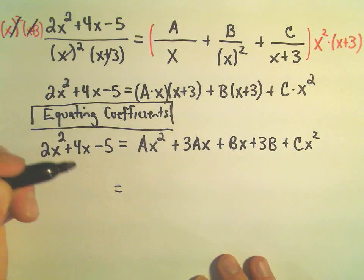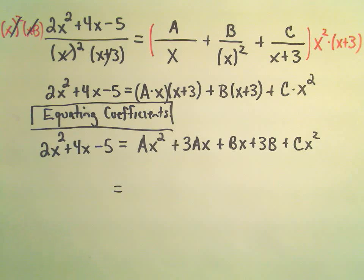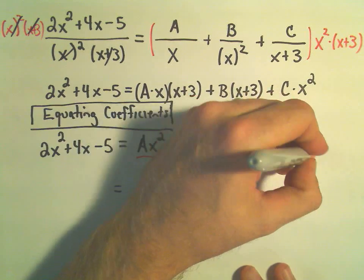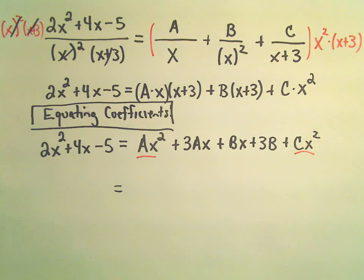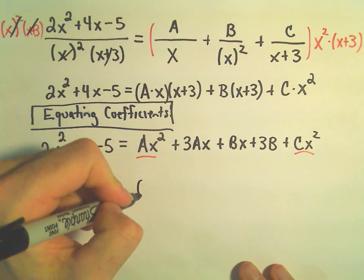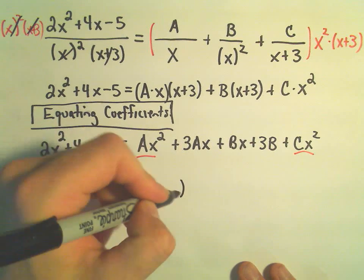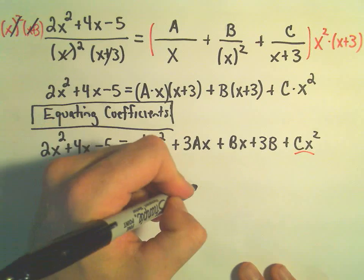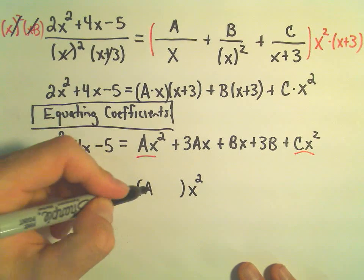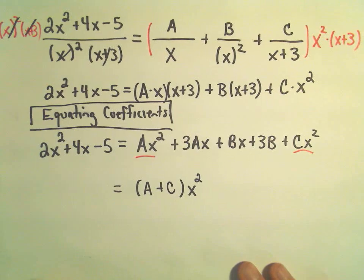So what I'm going to do is I'm going to stick my like terms together. So notice we've got an Ax squared and a Cx squared. I don't see any other x squared terms. I'm going to factor the x squared out. But instead of pulling it out to the left, I'm going to pull it out to the right.